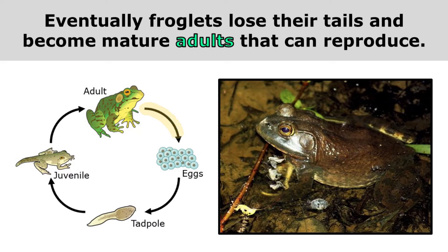So, adult frogs lay eggs. Those eggs hatch into frog larvae that we call tadpoles. Those tadpoles grow into juvenile frogs, which eventually become mature adults. And those mature adults lay more eggs, starting the cycle over. That's why we call it a life cycle.